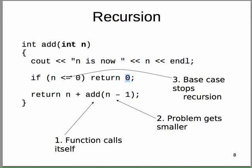Quick review of what we need for useful recursive functions: first, the function should call itself. Here is 'add' — it takes one int and calls itself with a smaller problem. Second, the problem has to get smaller. And finally, you need something like an if statement to stop the recursion, after which it unwinds.